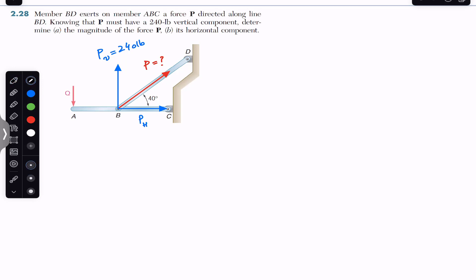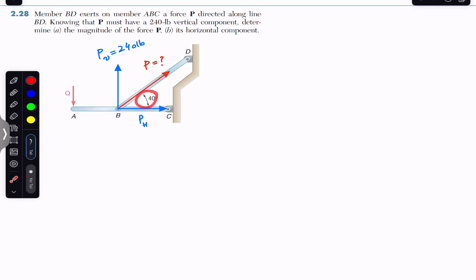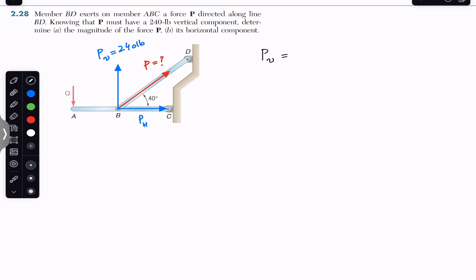We are given a 40 degree angle with the horizontal. The horizontal component is adjacent to the angle, so it is the cosine component. Since the vertical component is not adjacent to this angle, it is the sine component. So we can say that P vertical, the vertical component, is the sine component of force P. We write P sine of 40 degrees, and the vertical component magnitude is 240 pounds.